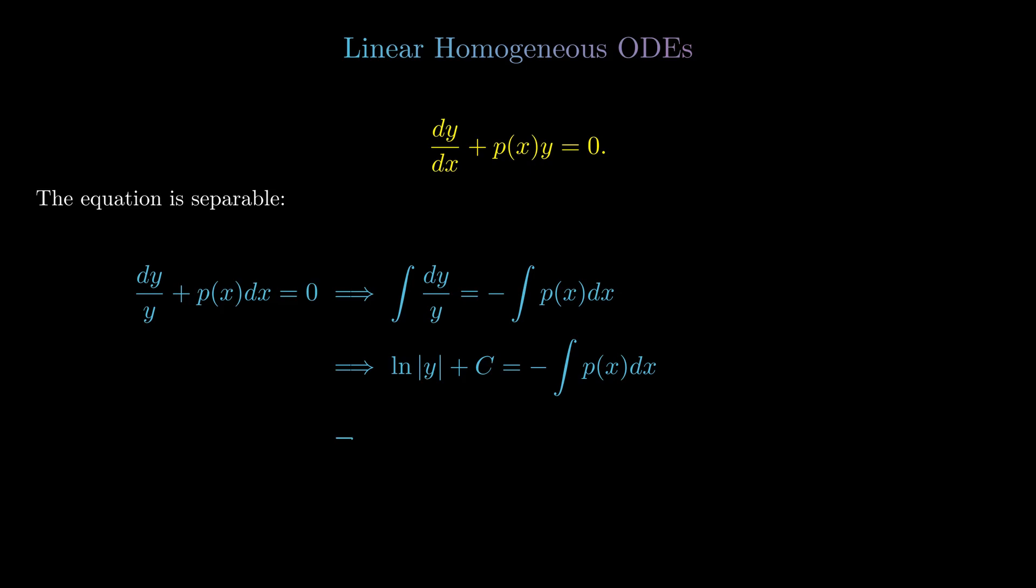We then exponentiate both sides. We have some constant a times the exponential of minus the integral of p(x)dx. But because of the form that the differential equation is in, namely that dy/dx + p(x)y = 0, the constant a will play no role when multiplying through.